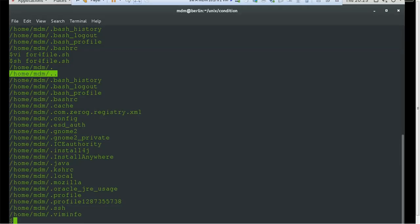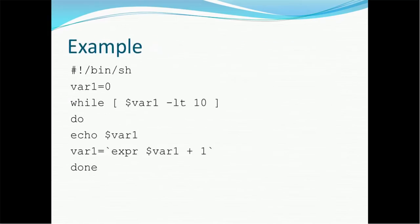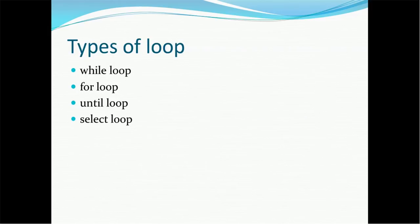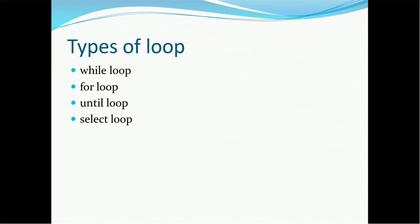There are other loop conditions such as select and until that we will see in the next session. I hope this tutorial helps you understand how to write logic for while and for loops. If you have any questions about Unix or related technologies such as Java, web services, EJB, or J2EE, please mention them in the comment section. Thank you for watching; if you liked this video please subscribe to my channel.